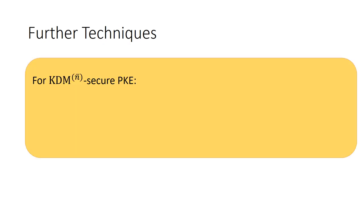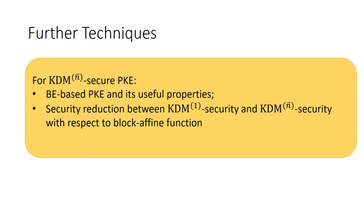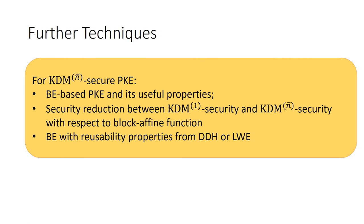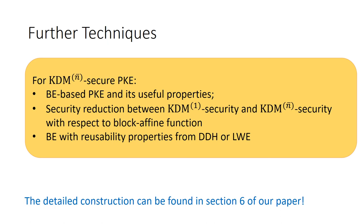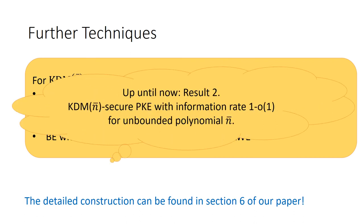Next, we consider how to enlarge the number of different public keys. In order to do this, we roughly adopt the following three aspects. First, introduce the notion of B-based PKE and its useful properties. Second, establish a security reduction between KDM-1 security and KDM-n-bar security with respect to blockifying functions. Third, instantiate PKE with reusable property from DDH or LWE. Up until now, we have achieved our second result: KDM-n-bar-circuit PKE with optimal information rate, and the detailed construction can be found in our paper.